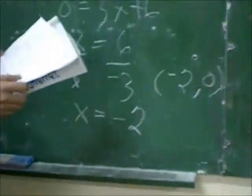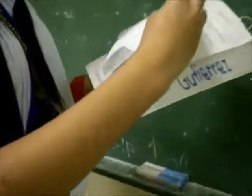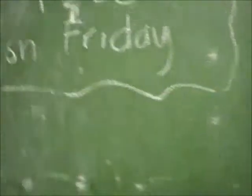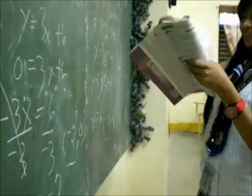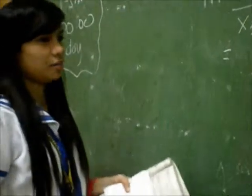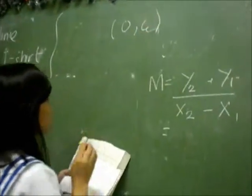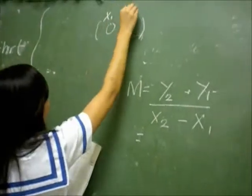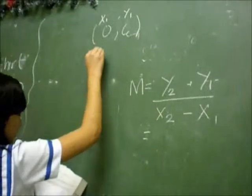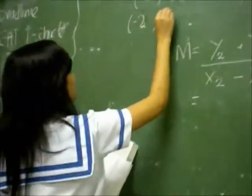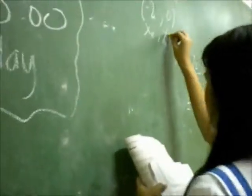So we now have two points. We will get the slope of the line using the formula m equals (y2 minus y1) over (x2 minus x1). We will use the point (0, 6) as x1 and y1, and (negative 2, 0) as x2 and y2.